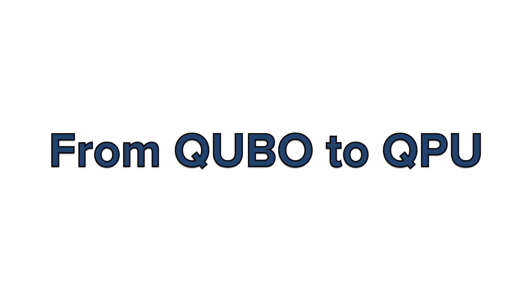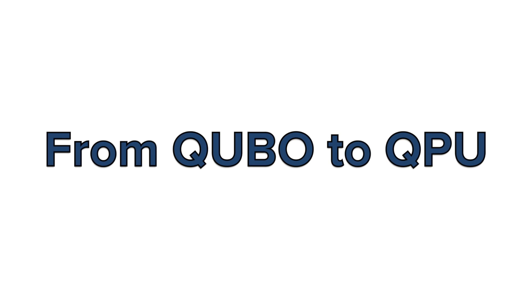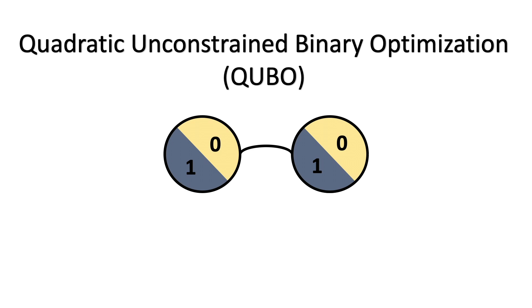The D-Wave quantum computer runs problems that are formulated as binary quadratic models. One type of binary quadratic model is a QUBO model, which stands for Quadratic Unconstrained Binary Optimization.